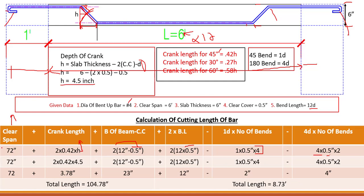So: 72 + 3.78 + 23 + 12 − 2 − 4 = 104.78 inches. The total cut length for this crank bar is 104.78 inches, which equals 8.73 feet. This is how we find out the cut length of a crank bar.